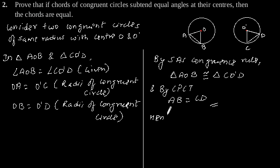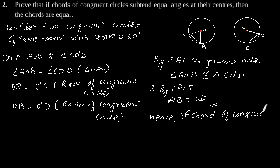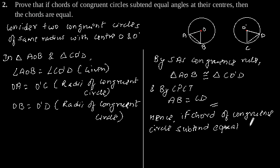Hence, we can say that if chords of congruent circles subtend equal angles at their centers, then the chords are equal.